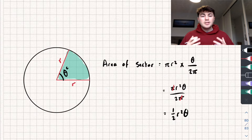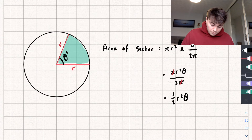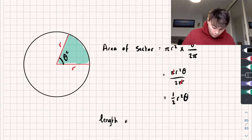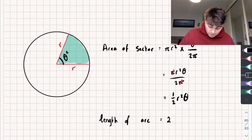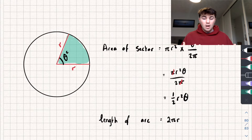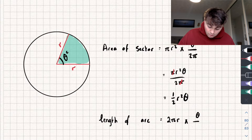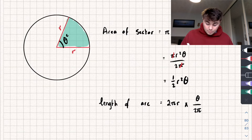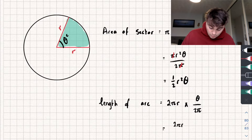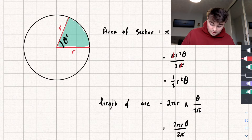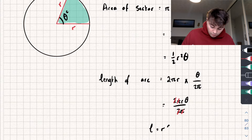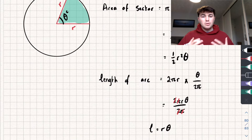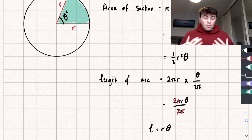We can apply the same logic to calculate the arc length. We take the total circumference, which is two pi r, and multiply by the fraction of the circumference we have, which is theta over two pi. The two pi's cancel, and we get that the arc length L is equal to the radius r multiplied by the angle theta.